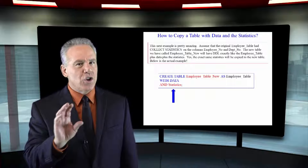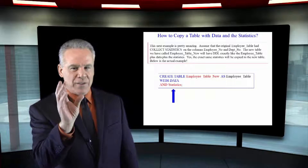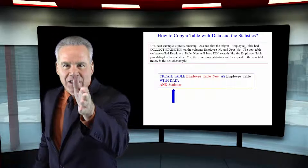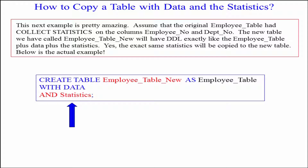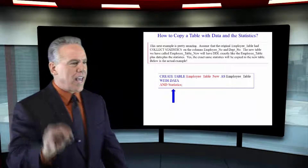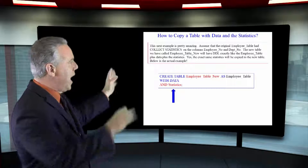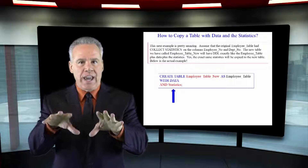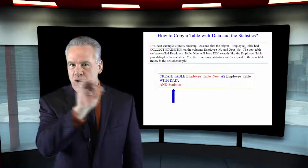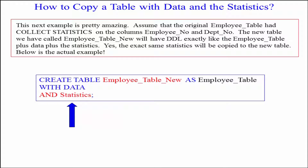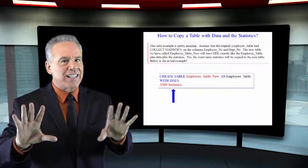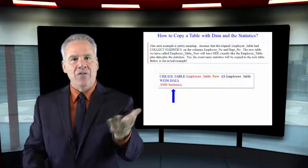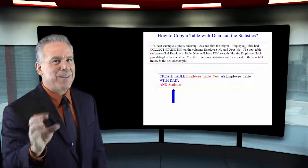Take a look at this query. I'm going to show you many things and they're going to have some subtle differences, but this is going to make you an expert. Here, create table employee_table_new as employee_table with data and statistics. This syntax means: make this new table exactly like the old table — same indexes, any constraints — an exact copy, and copy the data in there along with the exact same statistics.